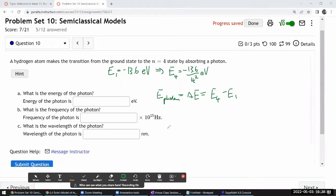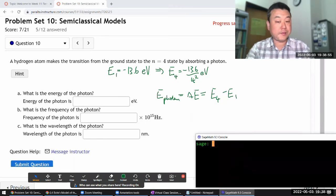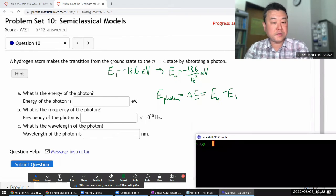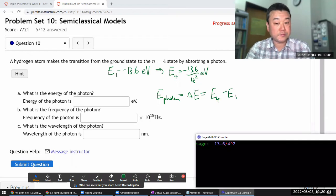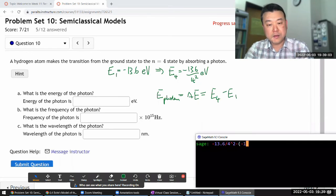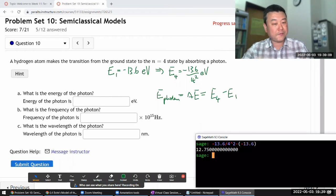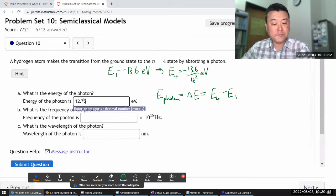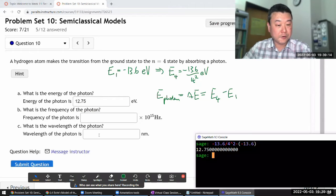So let me just do this calculation on my calculator. So energy level 4 minus 13.6 divided by 4 squared minus minus 13.6. Hopefully it's positive, 12.75 eV, that should be the answer for the energy of the photon. Let me keep going.